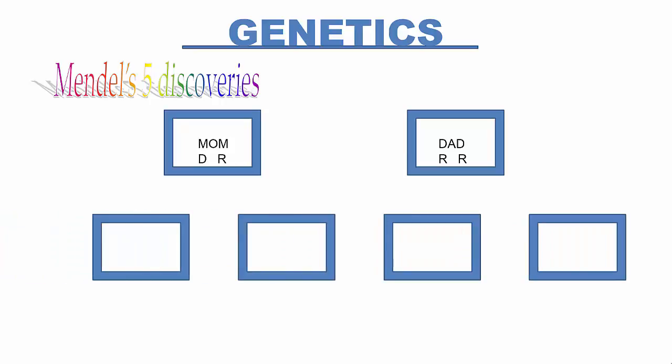Consequently, single-gene recessive traits can go undetected for generations. They are carried along by people who look dominant, but are genetically both dominant and recessive. Huntington's disease is a single-gene dominant trait, but most conditions that are single-gene traits are recessive.